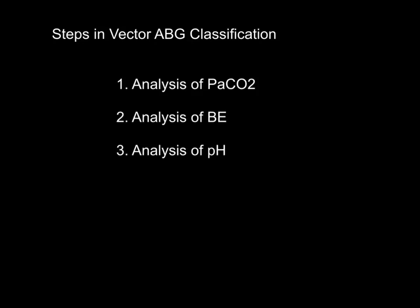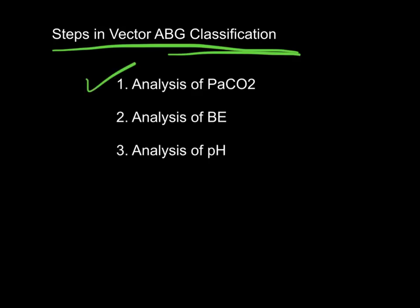When we do vector analysis to determine our blood gas classification, we have three basic steps. First, we're going to analyze the CO2. Then we're going to comparatively analyze the base excess, and then finally look at the pH. I'm going to give you some examples so you can see how this interplay works and how we're going to follow these three steps.